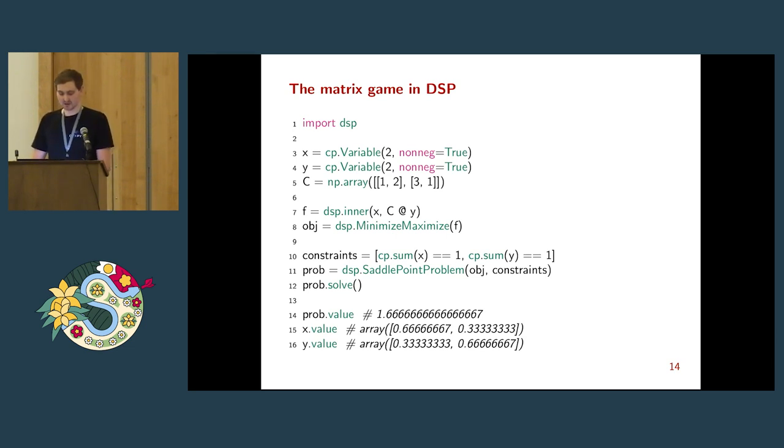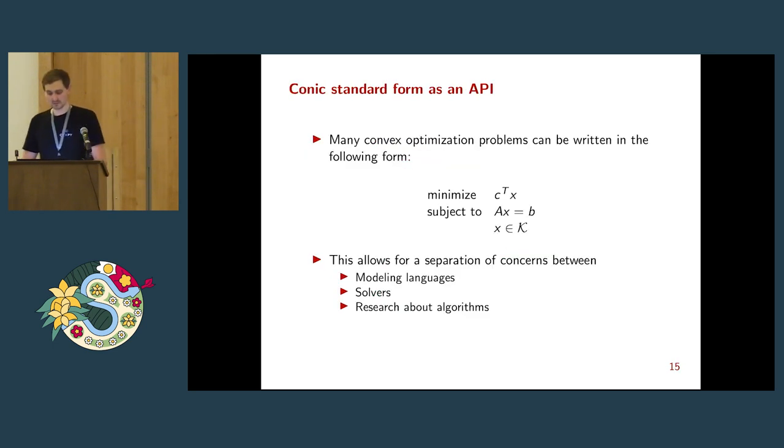How do we specify this matrix problem in DSP? We define our variables x and y. Our matrix, just a NumPy array. Now we define this DSP object, which is an atomic function, of which we introduced a few. You can only use this function to specify saddle functions or compose them to another one. Then we have an objective. Now it's not minimize, but minimize-maximize. It always minimizes automatically in the convex variables and maximizes in the concave variables. We have constraints again, so the x and y must sum up to one. Now we specify a saddle point problem instead of a regular problem. We solve it, and we see indeed the strategy that's an equilibrium here is some kind of mixed strategy. That makes sense. We've seen that these pure strategies don't really give us an equilibrium.